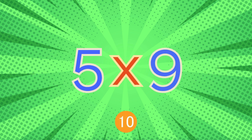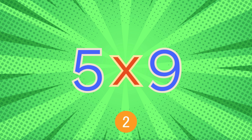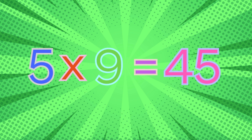Five times nine. Five times nine equals forty-five.